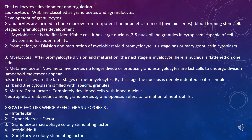Mature granulocytes are completely developed cells with a lobed nucleus and many granules. Neutrophils are the most abundant among granulocytes. Granulopoiesis refers to the formation of neutrophils. Growth factors that affect granulopoiesis include interleukin-1, tumor necrosis factor (TNF), granulocyte-macrophage colony stimulating factor (GM-CSF), interleukin-3, and granulocyte colony stimulating factor (G-CSF).